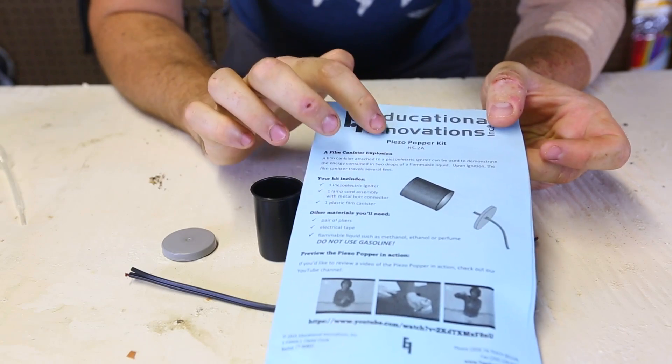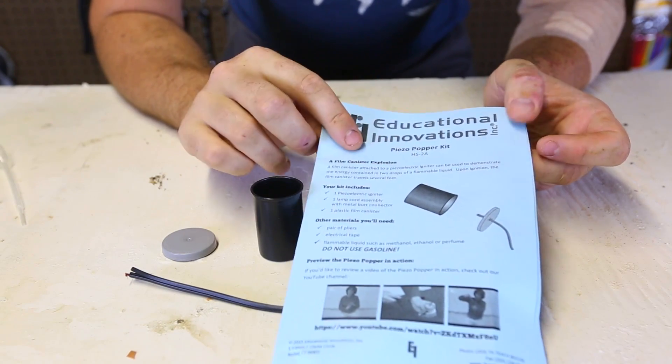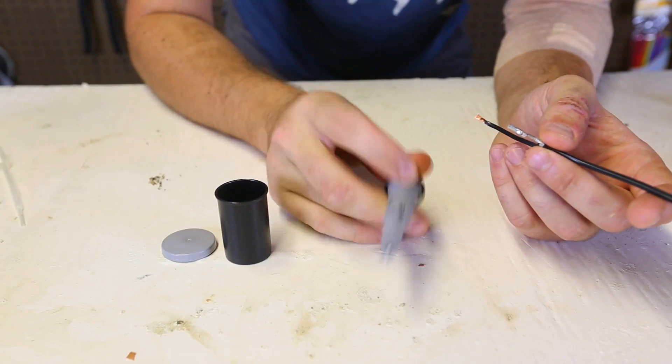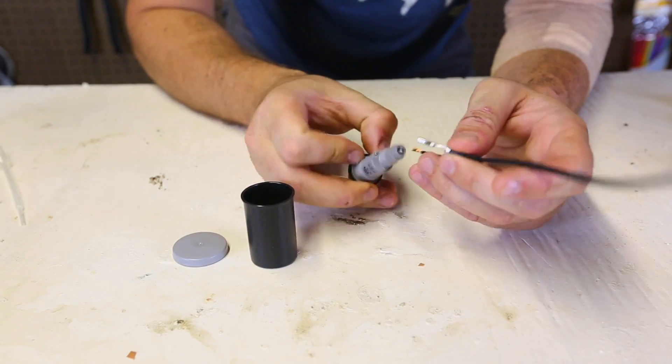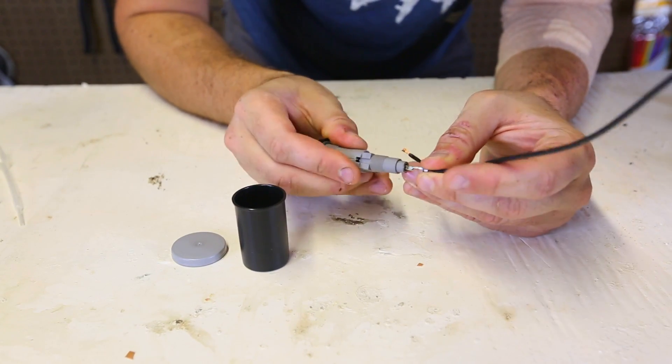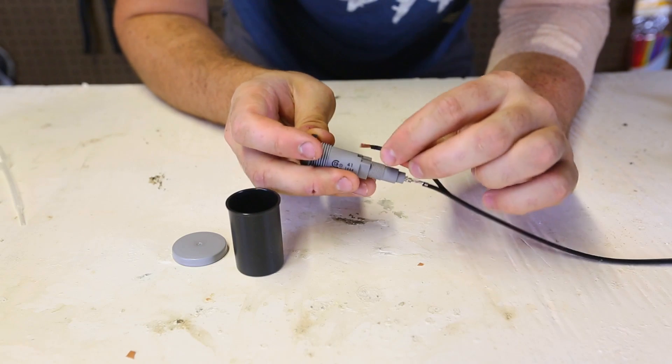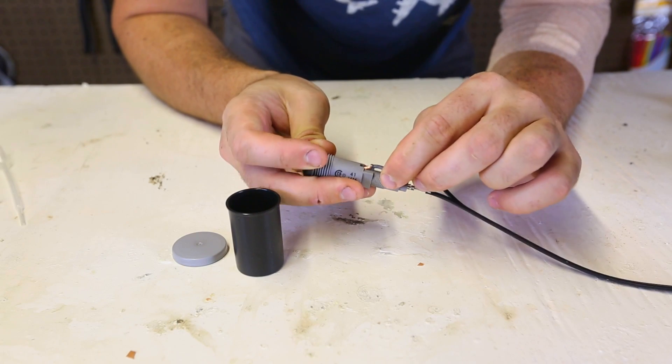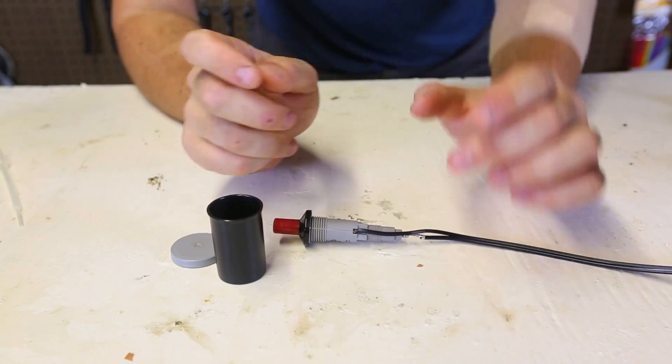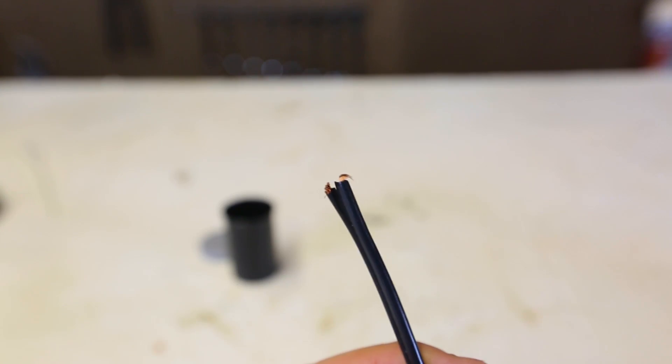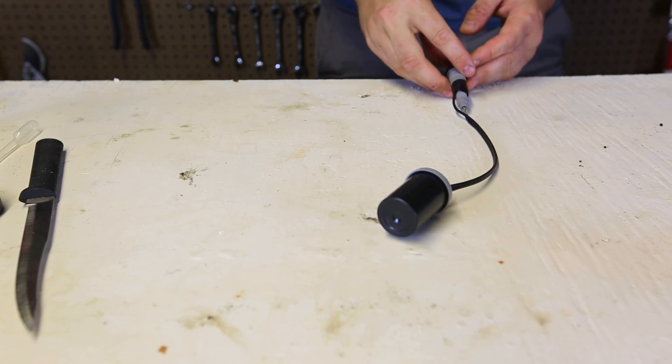For this science experiment, I got Piezo popper kit. This is a little igniter. This one, little film canister. And what I'm going to do is just connect it together. And then it says, I put this wire into here and just tape it together like that with the electric tape. If you look at it closer, you'll see a little spark. Now, let's strike it and see what happens.